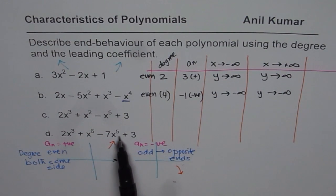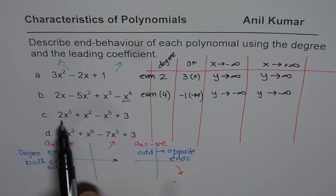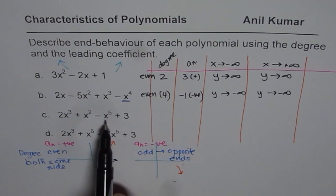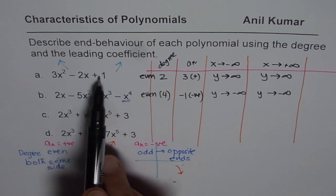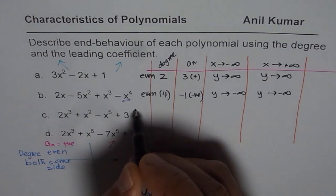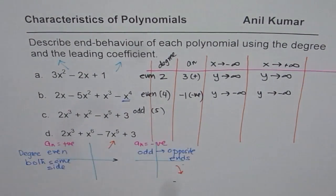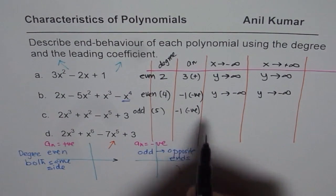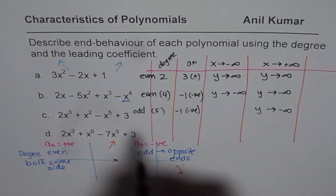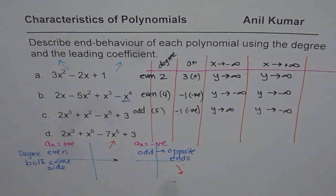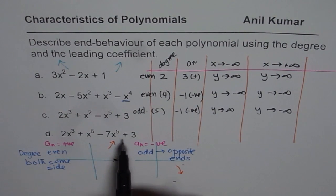Now we have examples where the degree is odd. For 2x³ + x² - x⁵ + 3, the terms are written in a different order — you need to check carefully on a test. The leading term is -x⁵, so the degree is 5, which is odd, and the leading coefficient is -1, which is negative. Negative means right side down, so y approaches negative infinity as x → +∞. Odd degree means opposite ends, so as x → -∞, y approaches positive infinity.